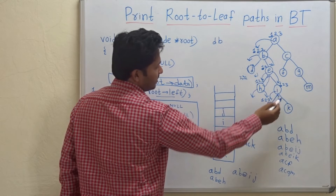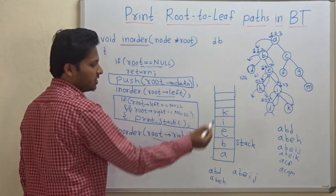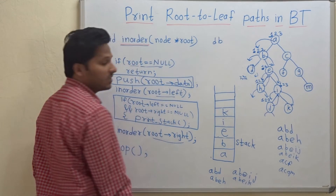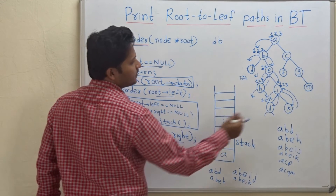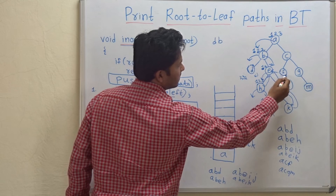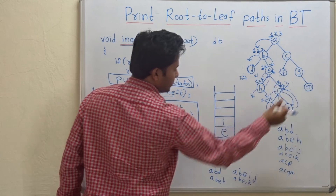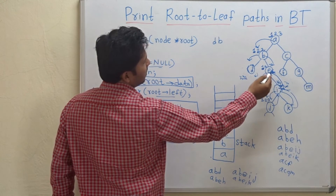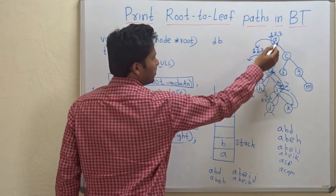Return to the parent, so pop J. Check the right side of I: we have visited K, so push K. As K is a leaf node, print the stack: A, B, E, I, K is another path. Go to the parent of K, pop K. All three steps of I are over, so go to the parent — pop I. Then all three steps of E are over, so go to the parent — pop E. Then all three steps of B are over, so go to the parent — pop B.